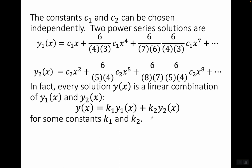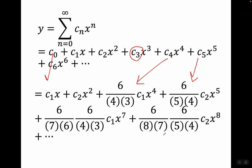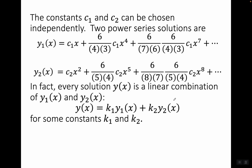The constants c one and c two can be chosen independently, so we break the solution into two power series. The first solution isolates the c one terms: y one of x equals c one times x plus six over four times three times c one times x to the fourth plus six over (7·6) times six over (4·3) times c one times x to the seventh, and so on. The second solution isolates the c two terms: y two of x equals c two times x squared plus six over five times four times c two times x to the fifth, and so on. Every solution y is a linear combination: y equals k one times y one of x plus k two times y two of x for constants k one and k two.